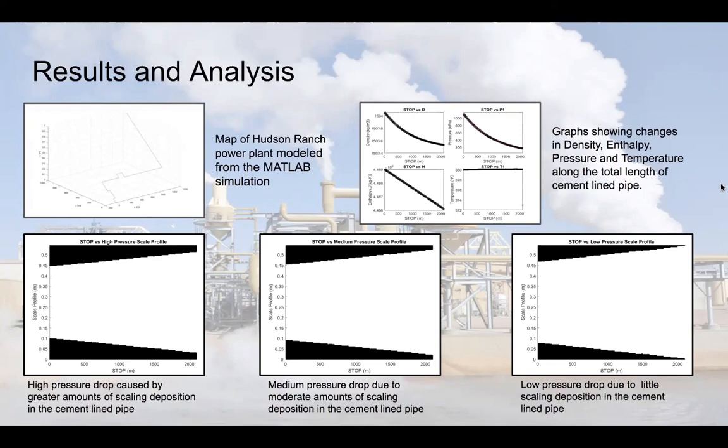The figure in the top left illustrates the path of the pipe. The figure in the top right denotes the changes in enthalpy, pressure, density, and temperature against the length of the pipe. The simulated scale buildup along the pipe is shown in the bottom three figures, which illustrate how scale develops in a cross-section along the profile of the pipe. Pictured are low, medium, and high-pressure scenarios from the Hudson Ranch plant.